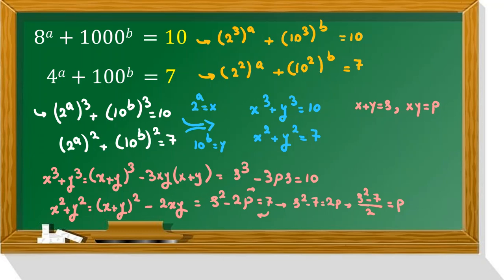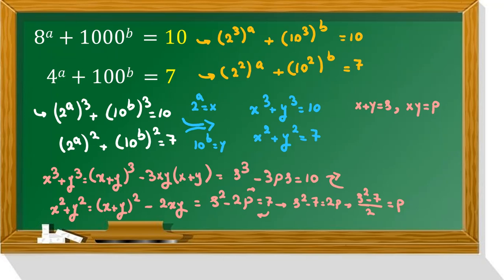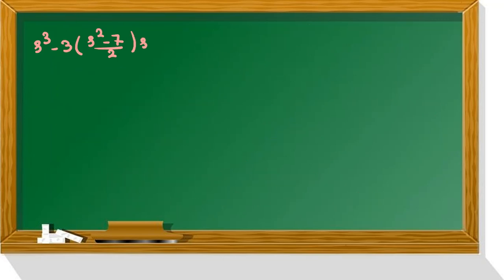Now we can replace p in terms of s in this equation, first equation. So in first equation, s cubed minus 3ps. This is s squared minus 7 over 2. We can replace p with that, times s equal to 10.